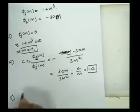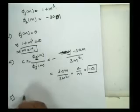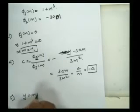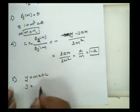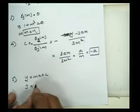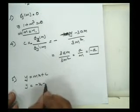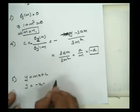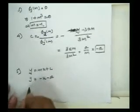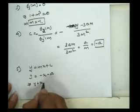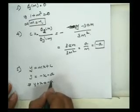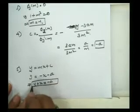Finally, substituting m and c in the main equation y = mx + c, where m = -1 and c = -a, then we get x + y = -a. This is the equation of the oblique asymptote of the folium of Descartes.